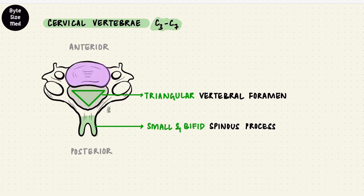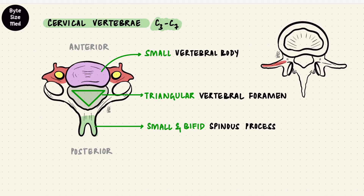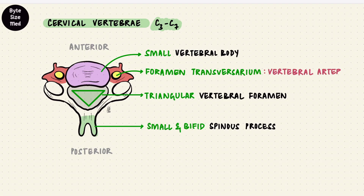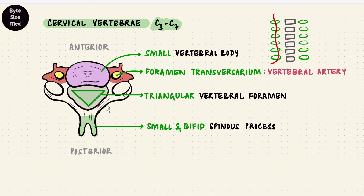On the sides of the small vertebral body are the transverse processes. They have a little foramen that we did not see in a typical vertebra — that's because it's only in cervical vertebrae. It's a space in the transverse process appropriately called the transverse foramen, or the foramen transversarium. The vertebral artery travels through this foramen from C6 upwards, going towards the base of the brain. If you stack them up, it'll make sense.